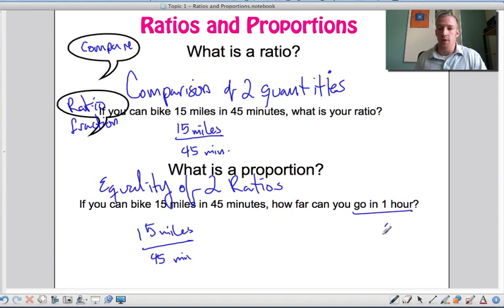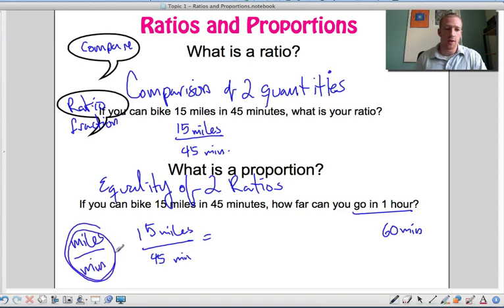If we know we can do 15 miles in 45 minutes, then how far can you go in one hour? Well, that's 60 minutes. So if we're using proportions, we're gonna make sure we have the same units both times, and we're doing miles on top over a minute. So I'll continually write these kinds of things on the side because it reminds me miles over minutes, miles over minutes. So 15 miles per 45 minutes, that's how many miles for 60 minutes.